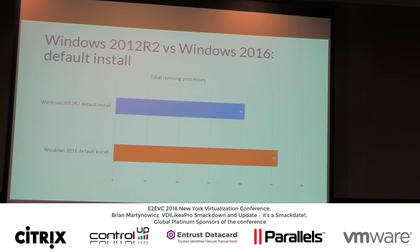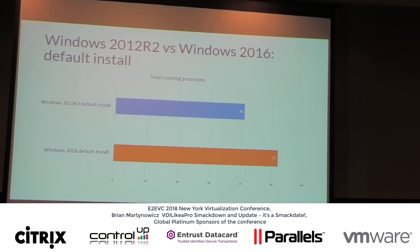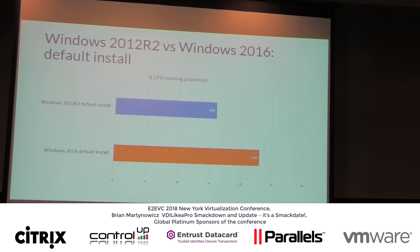We drilled into that a little bit more. Why is CPU utilization higher with 2016 than with 2012? The reason is pretty clear: there are more processes running. There are more services installed by default in 2016, and therefore we're just consuming more CPU at a baseline level.